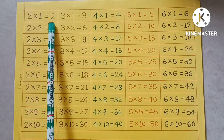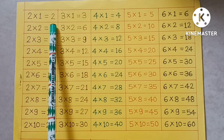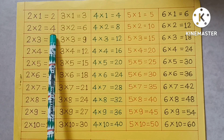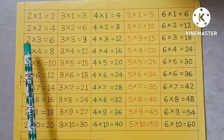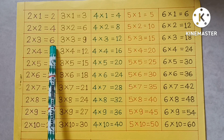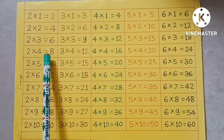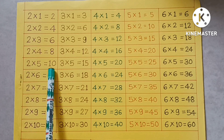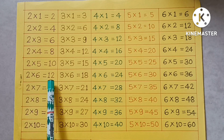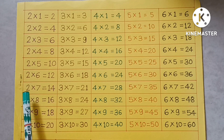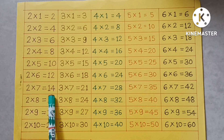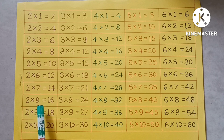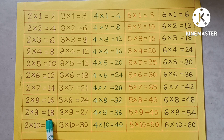2×1=2, 2×2=4, 2×3=6, 2×4=8, 2×5=10, 2×6=12, 2×7=14, 2×8=16, 2×9=18.